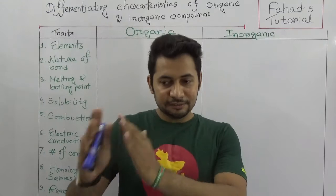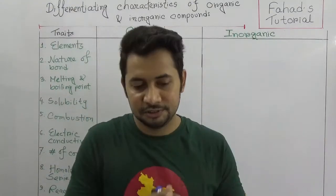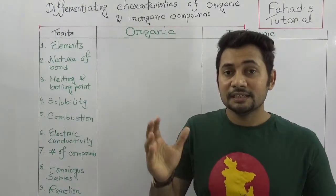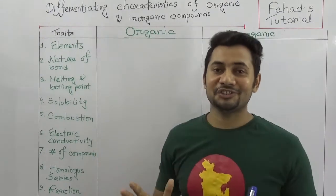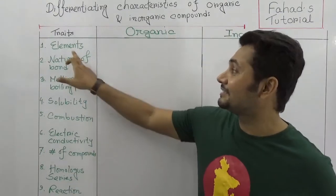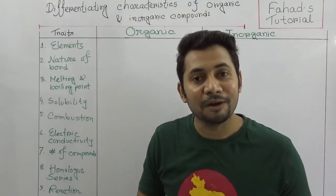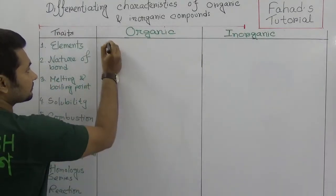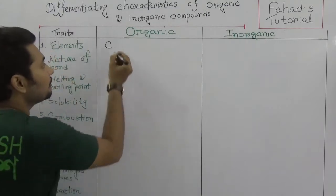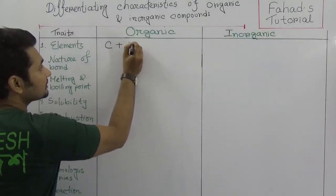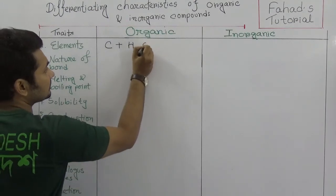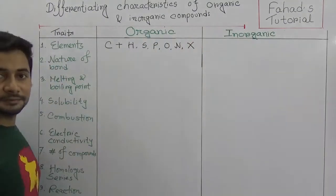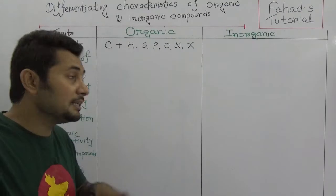Now we need to know the differences between organic and inorganic compounds. If you look closely at the traits and the differentiating factors, firstly there are the elements. Organic compounds are made up mainly of carbon, and with carbon we can also see hydrogen, sulfur, phosphorus, oxygen, nitrogen, and halogens.